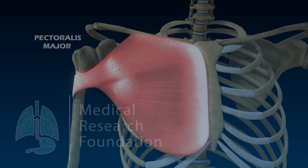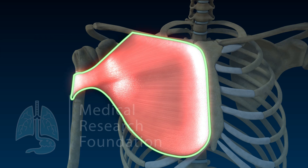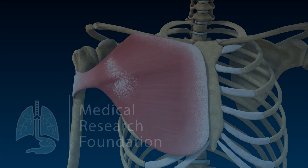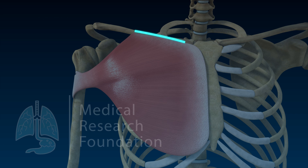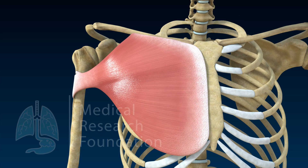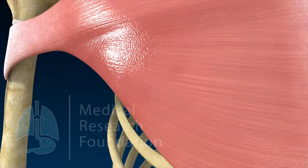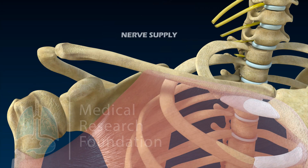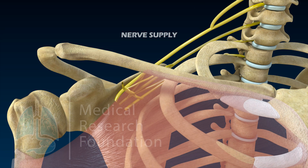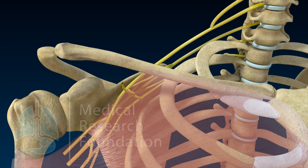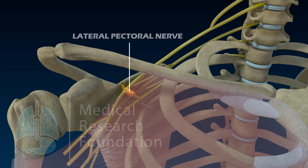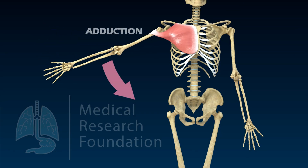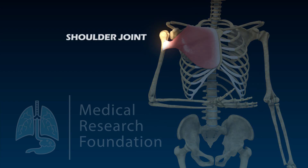Pectoralis major is a thick, fan-shaped muscle situated in the pectoral region with two heads of origin. The clavicular head arises from the medial half of the anterior surface of the clavicle, and the sternal head arises from the anterior surface of the sternum. Insertion takes place in the lateral lip of the bicipital tubercular sulcus. The sternal head is supplied by the medial pectoral nerve and the clavicular head by the lateral pectoral nerve. Its action is adduction and medial rotation of the humerus at the shoulder joint.